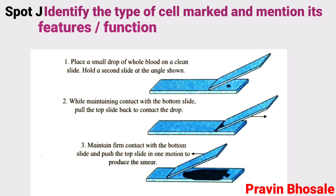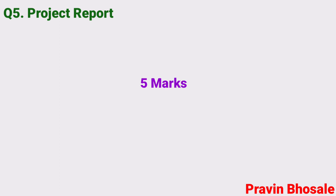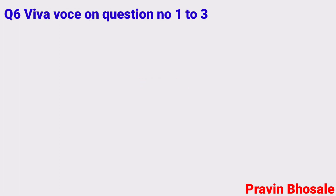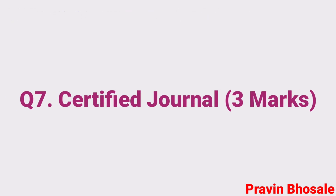Question number five is the project report, five marks. Question number six is viva voce, based on questions one, two and three — viva questions will be asked, two marks. Question number seven is the practical notebook published by Balbharati, that is the certified journal, three marks.